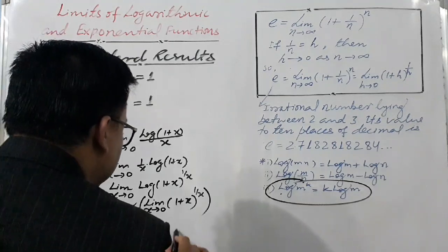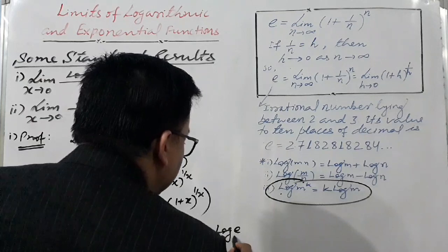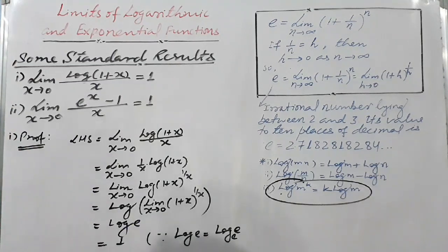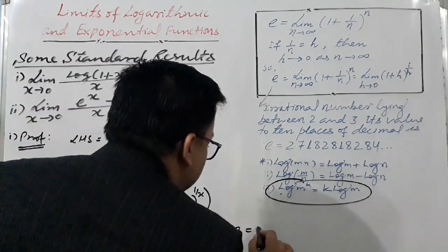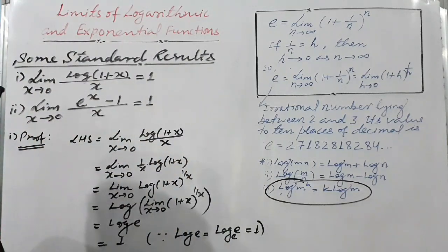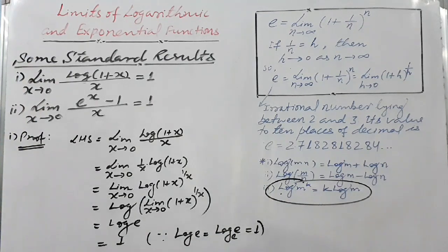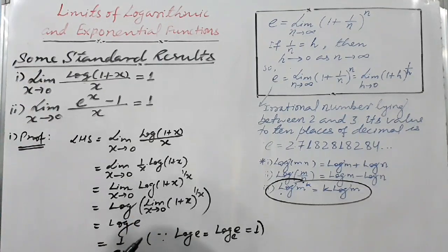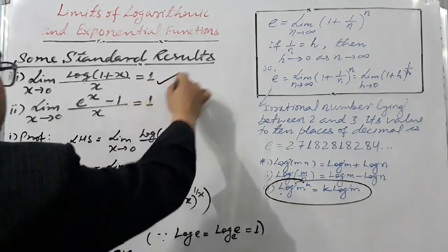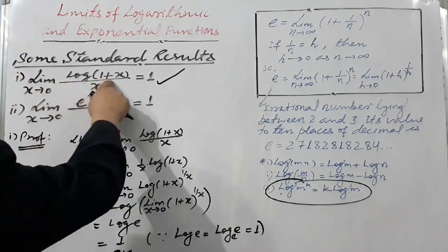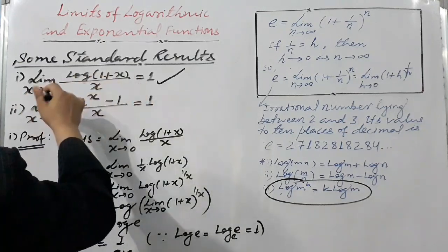Log e means log of e to the base e. Since we haven't written the base, base e is understood - it's the natural log. This is a property of logarithm: log of e to the base e equals 1. You can get full knowledge about this when you study the logarithmic function topic. Therefore, we can say the limit of log(1 + x) / x as x tends to 0 is equal to 1.